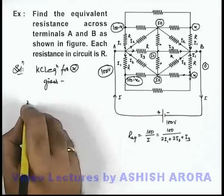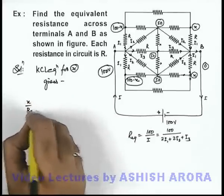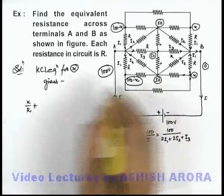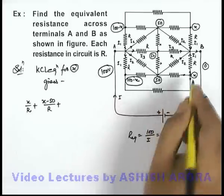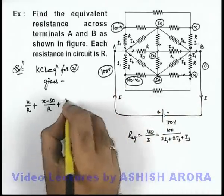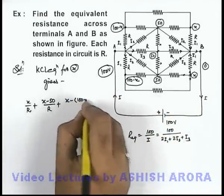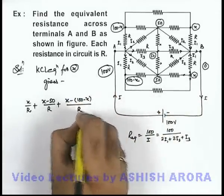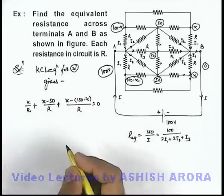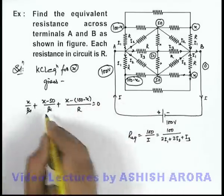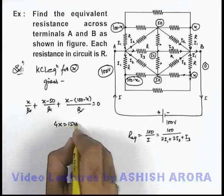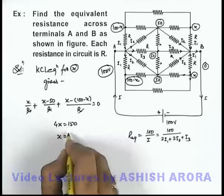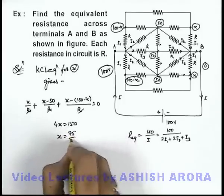So current going in this direction will be x minus 0 by R, plus current going here will be x minus 50 by R, plus current going in this direction will be x minus (hundred minus x) divided by R. This should be equal to 0. On simplifying here R gets cancelled out, this will be 4x is equal to 150. So again x can be written as here it is 75 by 2 volt.